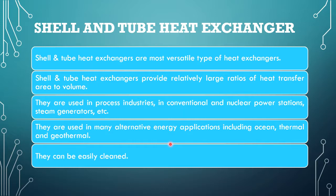So what is a shell and tube heat exchanger? It is a type of heat exchanger which is widely used in the process industries for heat transfer purposes. Shell and tube heat exchangers are the most versatile type, used in all types of chemical industries. They are mostly used because they provide relatively large ratios of heat transfer area to volume, and are used in process industries, conventional industries, nuclear power stations, and steam generators.